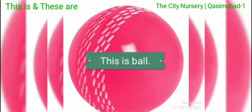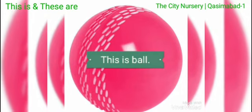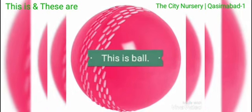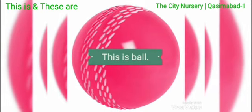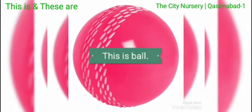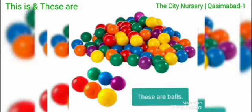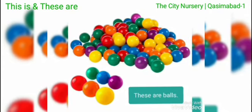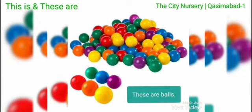Hello everyone, today we are going to learn the use of 'this is' and 'these are'. As you can see, this is a ball. As you know, there is only one ball, so we will say 'this is a ball'. Now you can see that there are many balls, so we will not use 'this is'.